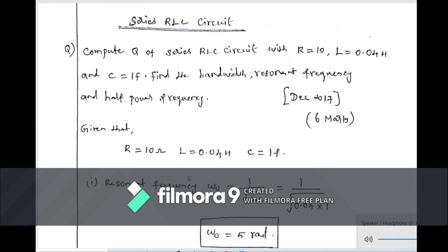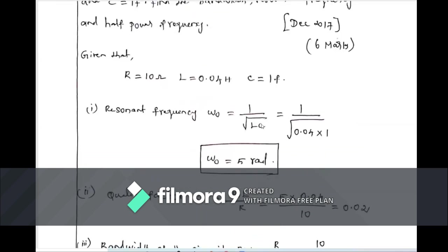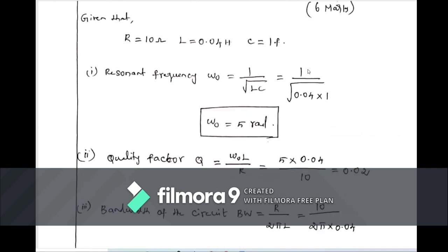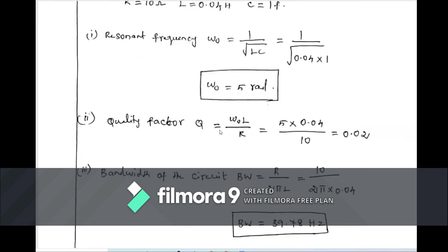The resonant frequency can be expressed as ω₀ (in radians) or f₀ (in hertz). Here we calculate ω₀. The formula is ω₀ = 1 / √(LC). Substituting L = 0.04 and C = 1: ω₀ = 1 / √(0.04 × 1) = 5 radians per second.